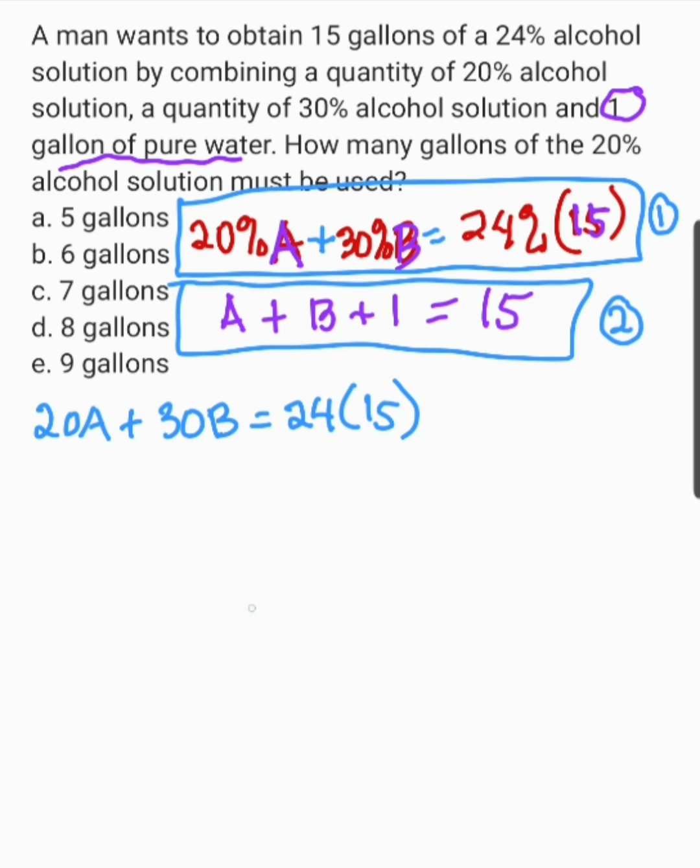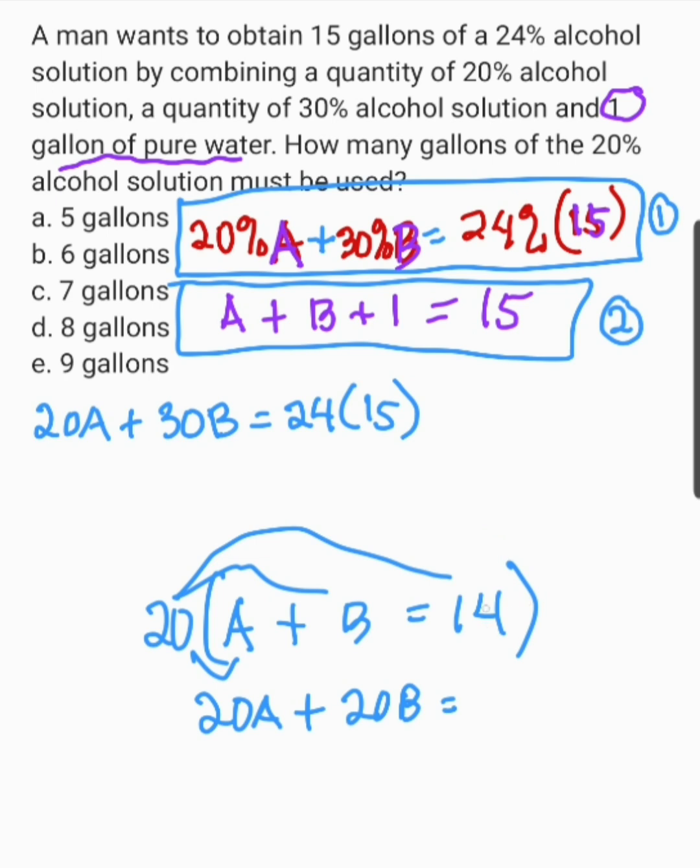Now, itong si A plus B, A plus B equals 14. Kung i-combine natin yan sa isang equation, dapat isa dito sa variable ay dapat makancel out natin. Kung paano yan, pwedeng i-multiply natin ang buong equation by 20 or by 30. Gusto ko yung 20 ang gamitin natin. So, i-multiply natin ang buong equation by 20. This is 20A plus 20 times B. This is 20B equals 20 times 14 and this is 280.